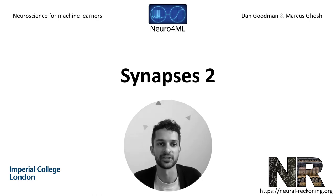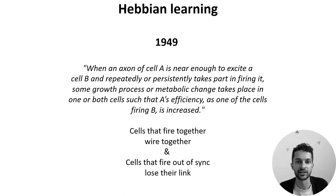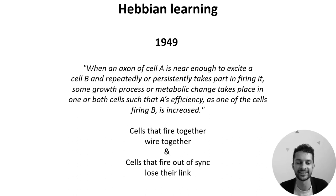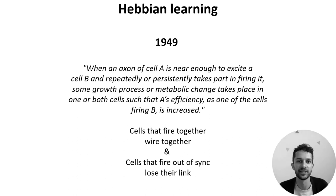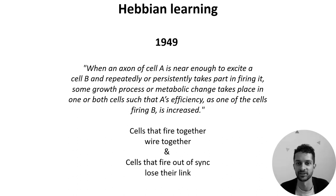But what is the equivalent in biology? As early as 1949, Donald Hebb proposed a relatively simple learning rule: when an axon of cell A is near enough to excite cell B and repeatedly or persistently takes part in firing it, some growth process or metabolic change takes place in one or both cells such that A's efficiency as one of the cells firing B is increased. At the time this was just a theory, but experimental evidence confirmed it around 20 years later.